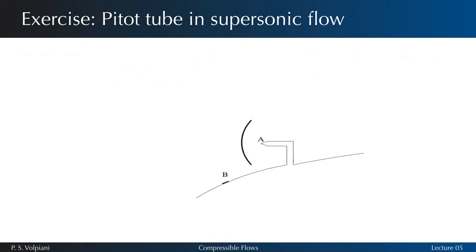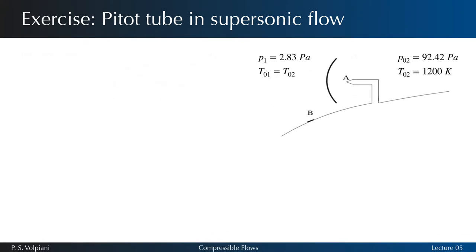Given the definition of the Mach number, the speed U1 can be calculated as M1 times A1. Moreover, the speed of sound is given by the square root of gamma RT.